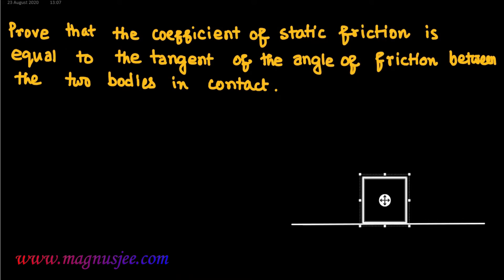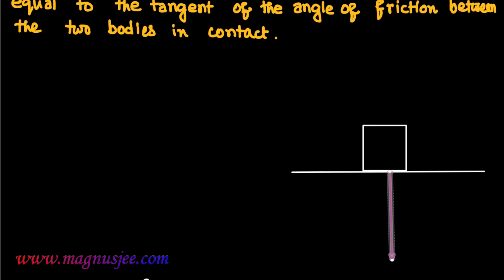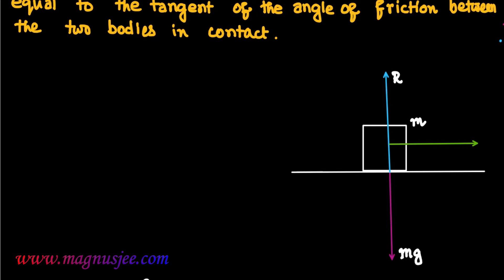In the diagram, a body is placed on the rough surface of another body and its weight mg is acting vertically downwards from the lowest point — though actually weight should act from its center of gravity, for convenience it is taken from the lowest point. Normal reaction R acts vertically upwards. An external force Fe is applied at its center of gravity, and limiting friction FL acts towards the left, in the opposite direction of Fe, on the surface in contact.